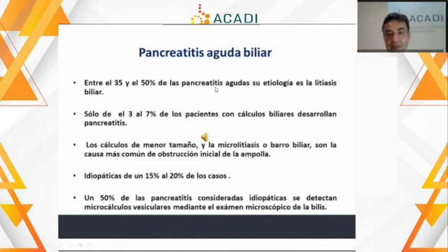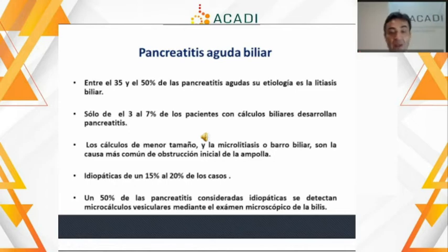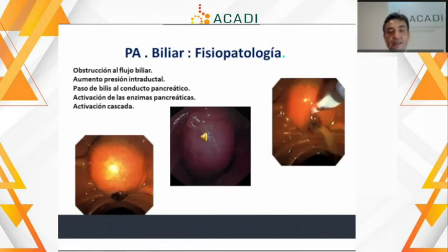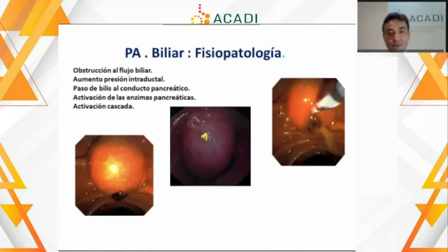Entonces, un paciente clasificado inicialmente como pancreatitis aguda idiopática, apropiadamente seguido, se va a encontrar que la litiasis oculta es la etiología, ya que esta produce una obstrucción al flujo biliar con el aumento de la presión intraductal y todo el desencadenamiento de la respuesta inflamatoria ya mencionada.